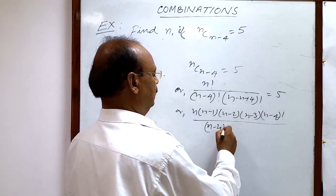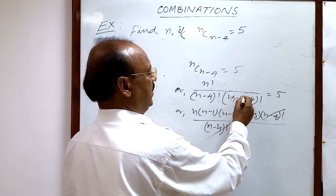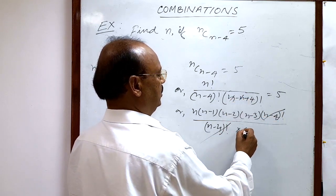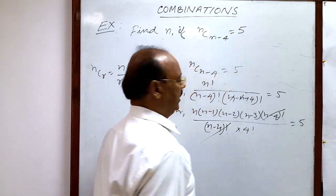Here, n minus n will cancel out, so we have 4 factorial. This is equal to 5.